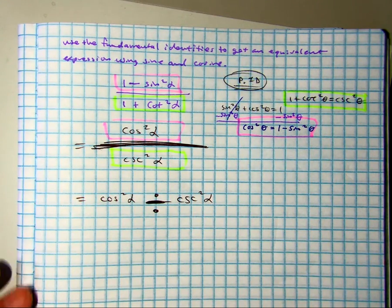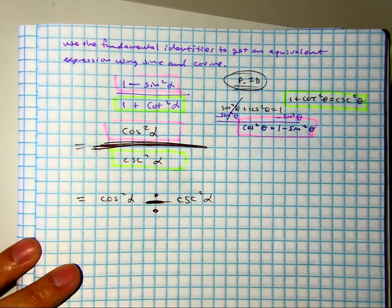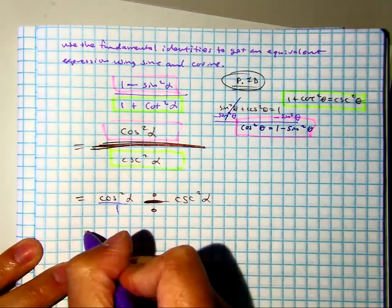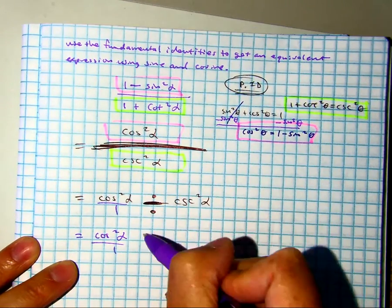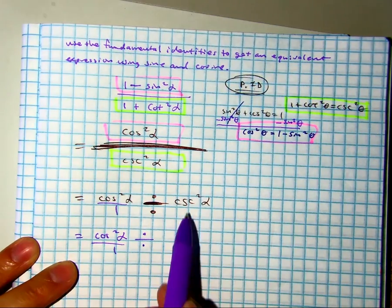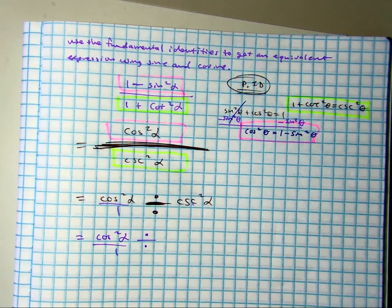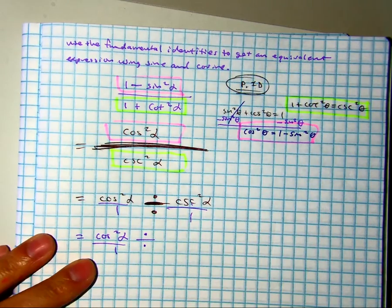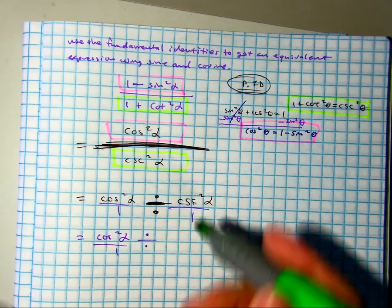Let's make these fractions. That might help us. So, I have cosecant squared alpha over 1. Divided by, class, how can I make that a fraction? I need another identity. Talk to your partner.